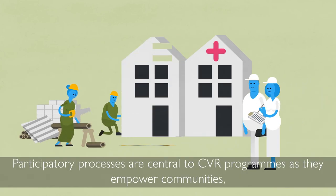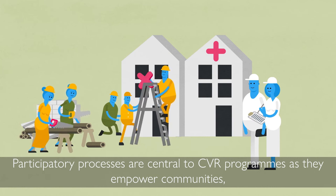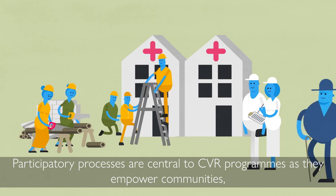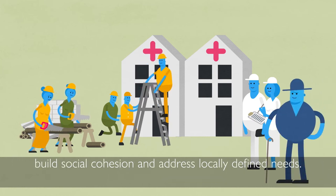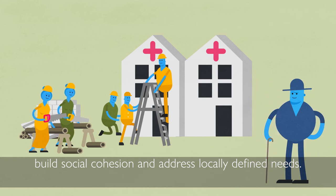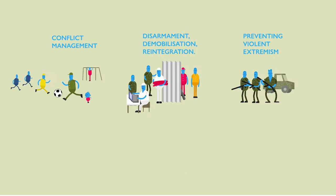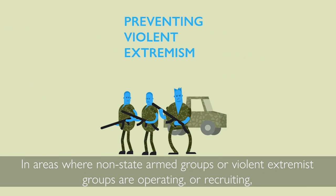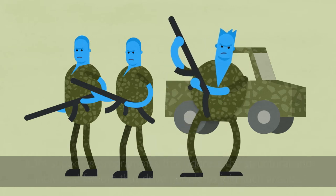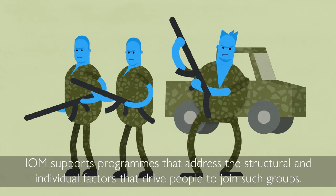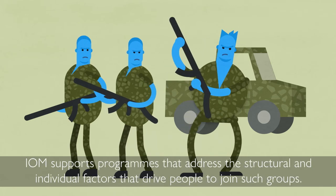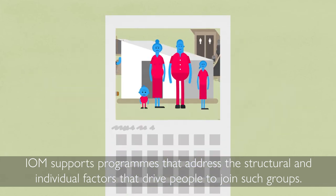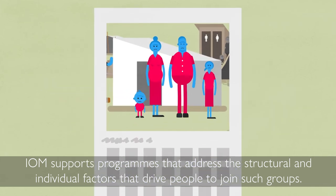Participatory processes are central to CVR programs as they empower communities, build social cohesion and address locally defined needs. In areas where non-state armed groups or violent extremist groups are operating or recruiting, IOM supports programs that address the structural and individual factors that drive people to join such groups.